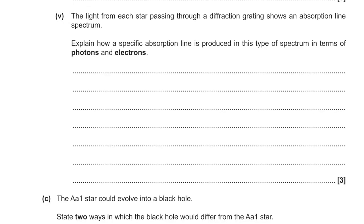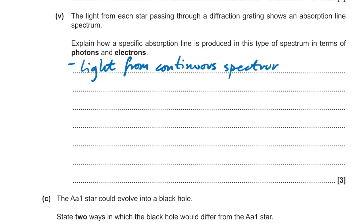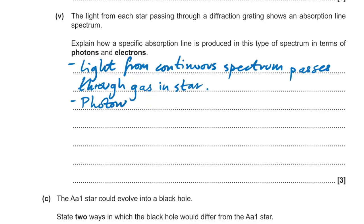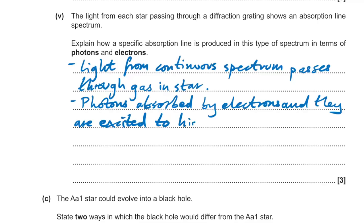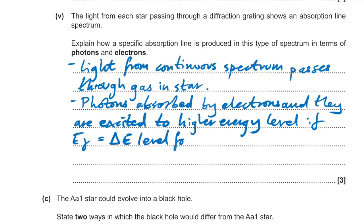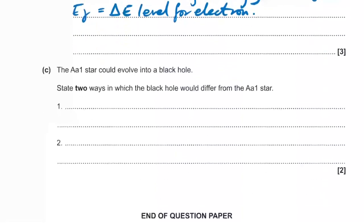Suggest how an astronomer can deduce that the three stars have different surface temperatures using an optical telescope: they will appear different colors. Explain how a specific absorption line is produced: light from a continuous spectrum (all wavelengths) passes through the gas in the star. Photons are absorbed by electrons, which are excited to higher energy levels. The energy of the photon equals the change in energy level of the electron.